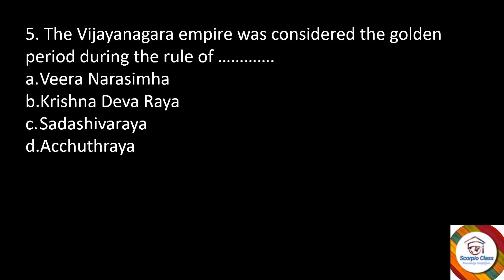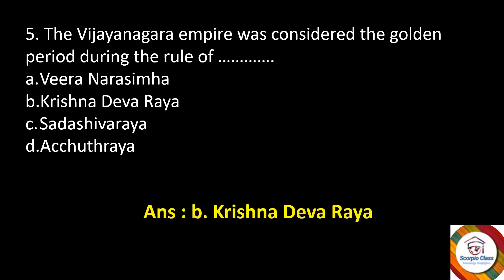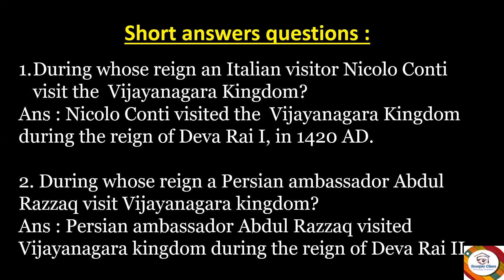Next question: the Vijayanagara Empire was considered the golden period during the rule of — options are Veera Narasimha, Krishnadeva Raya, Sadashiva Raya, or Achutaya Raya. The answer is option B — Krishnadeva Raya, one of the most famous and important rulers of the Vijayanagara Empire. His rule is known as the golden period. That ends our multiple choice questions.